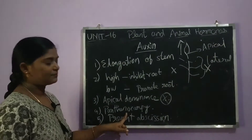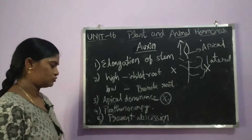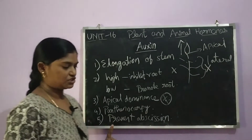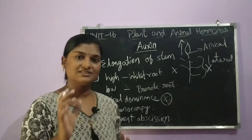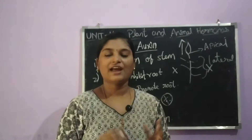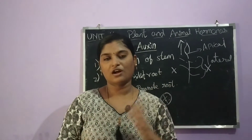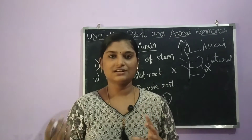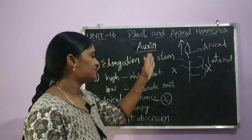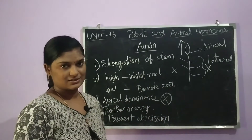Using the tissue culture technique with auxin, you can produce seedless fruits. The fifth function is that auxin prevents abscission — the formation of dead cells. Auxin prevents the dead cells from forming and promotes plant growth. These are the physiological functions of auxin.